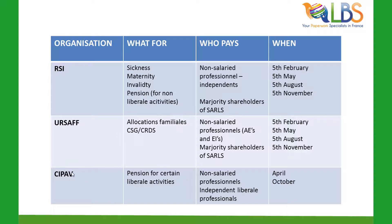The last category is the CIPAV, which does not concern everybody. It is basically for those who do not pay pension as part of the RSI — this is extremely confusing and quite understandably so, as the CIPAV is possibly the most difficult organization to deal with, speaking from experience. Pension for certain independent businesses is handled by the CIPAV. You would normally receive a document from them, but unfortunately they are very bad at sending it and you often have to chase them. They have payments twice a year — April and October — but they also offer the option to pay monthly, which I would advise.